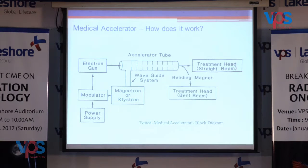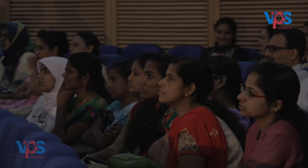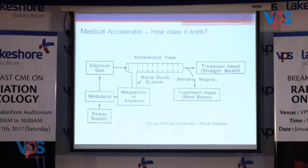A typical block diagram of the Linear Accelerator includes: a power supply which provides DC power to the modulator; a Magnetron or Klystron which emits microwave radiation; an electron gun as the source of electrons; and the accelerator waveguide tube where the electrons get accelerated. The tube has a linear structure — that is how the name 'Linear Accelerator' came about. After getting accelerated, the electron reaches the treatment head where several components are present.